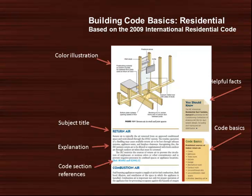The material is laid out to help the reader easily identify key information. Each subject is identified by title, followed by a brief explanation of the code requirement. References to the applicable code sections are also included. Color illustrations assist the reader in understanding the correct application of the code. Notes containing helpful information and bullet points of key code requirements appear in the page margins.